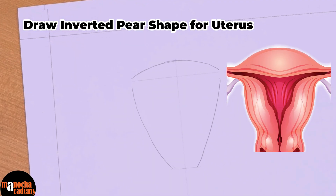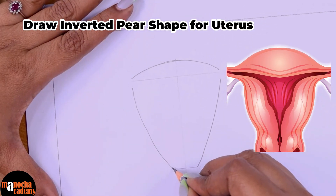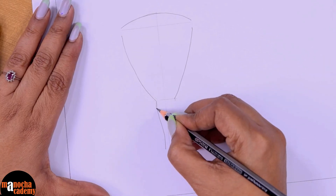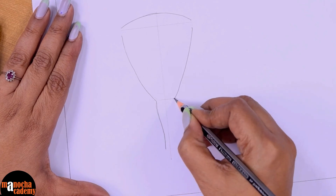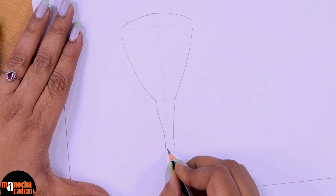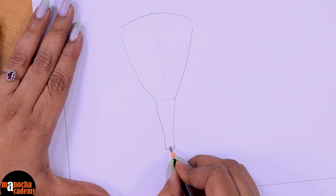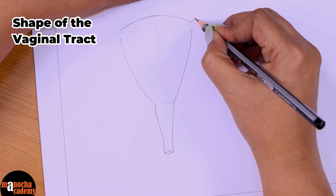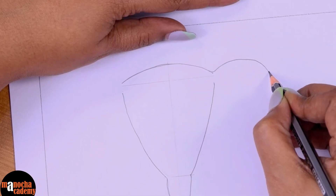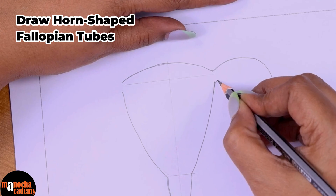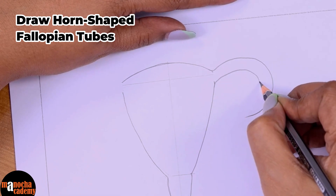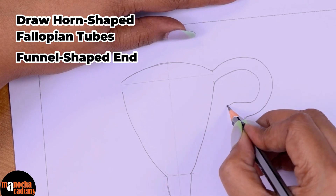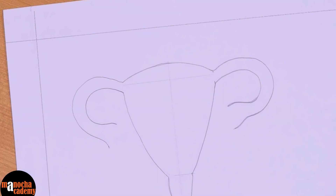Remember, if you recall the structure of the uterus, it is inverted pear-shaped. From here I will draw one line on the other side also, and that gives us the shape of the vaginal tract. The overall structure is done here, and then I will draw the horn-shaped fallopian tube. For that we will curve it like this — from the end, make sure that the fallopian tube has a similar diameter all over — and then it ends in a funnel-shaped part. So the two fallopian tubes are done.